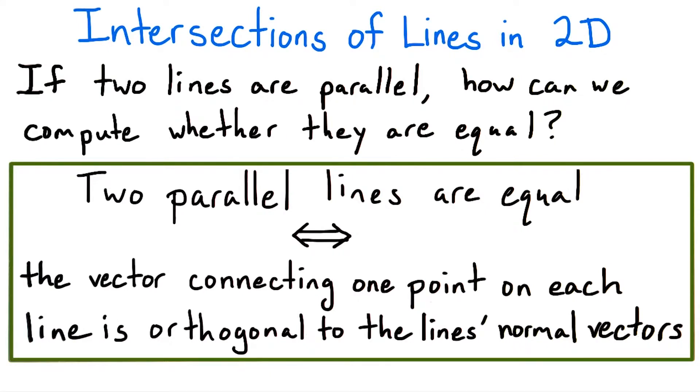This gives us a computable test for whether two lines are the same once we know that they're parallel. Two parallel lines are coincident or equal if and only if the vector connecting some pair of points, one from each line, is orthogonal to both the lines' normal vectors.